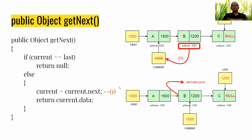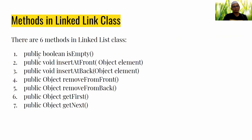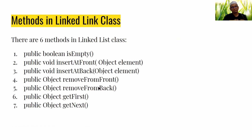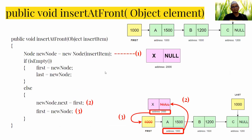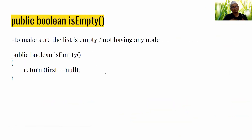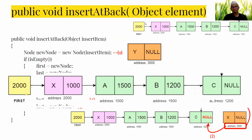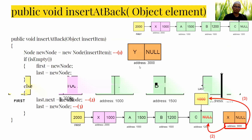We have now covered all seven methods in the LinkedList class: isEmpty, insertAtFront, insertAtBack, removeFromFront, removeFromBack, getFirst, and getNext. It is essential that you understand every method in order to implement a linked list. That's all for this session. Thank you.